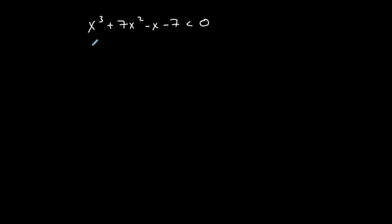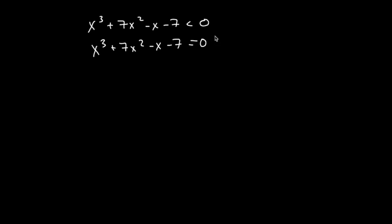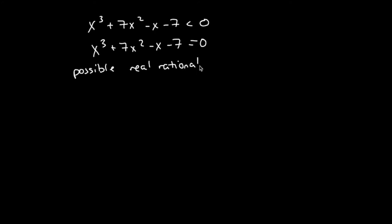Now here's a situation where the polynomial is not factored for me, so I have to factor it first. I'll solve the equation by factoring, then deal with the inequality. To find the boundary points, I'll use the rational roots theorem to determine the possible real rational solutions — taking all factors of the constant term divided by all factors of the leading coefficient.